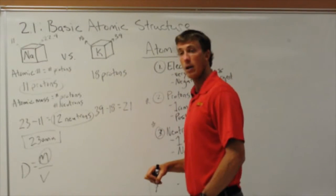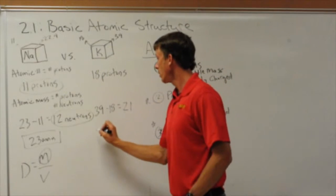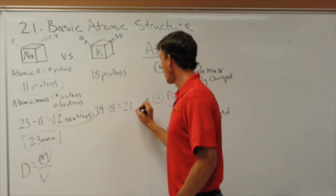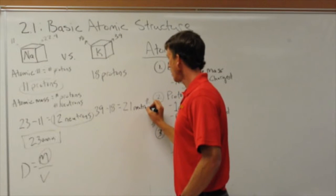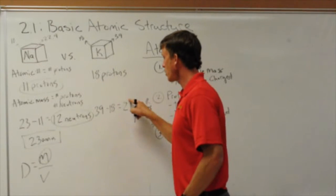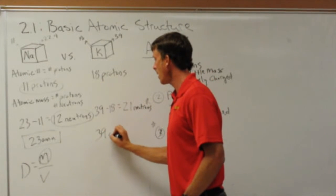So that would be 21. So now we have 21 neutrons. So 18 plus 21, again, is 39 amu.